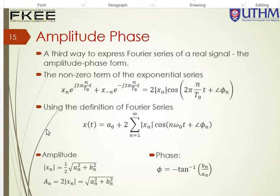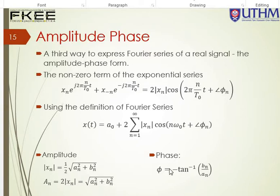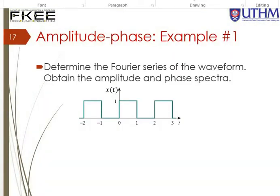If you look here, this is the amplitude and phase. The amplitude is the modulus |Xₙ|. The formula is: the square root of half of aₙ squared plus bₙ squared, from which you get the capital Aₙ. And then you can get the phase, which is the negative inverse tangent of bₙ over aₙ.